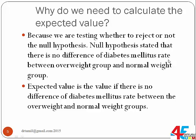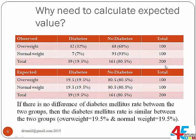Therefore, the expected value is the value if there is no difference in diabetes mellitus rate between the overweight and the normal weight group. If there is no difference, then the diabetes mellitus rate should be similar between the two groups.